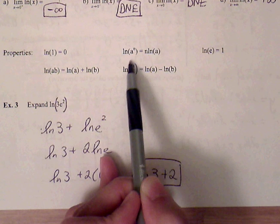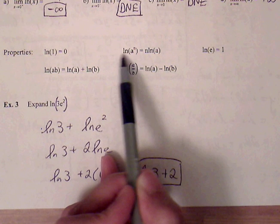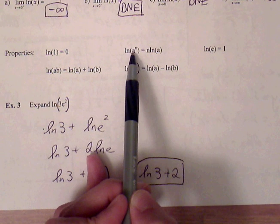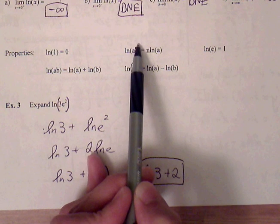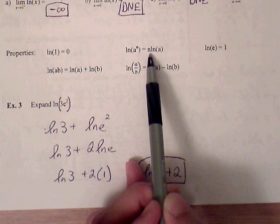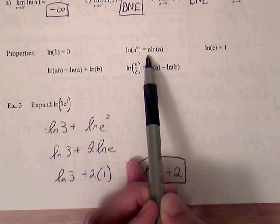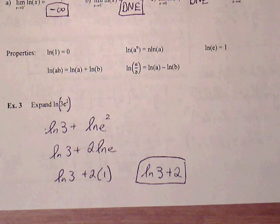LN of A to the nth power, this is one of the nicest properties for logs. This allows us, with logs, we're allowed to bring that exponent down in front, which makes solving for problems a lot more convenient, a lot easier.